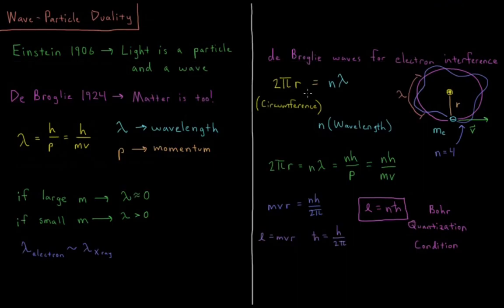What happens when we have 2πr equals n times lambda? We have 2πr equals nλ. Lambda equals h over p, so nλ is nh over p. p is momentum, mass times velocity, so that's nh over mv.